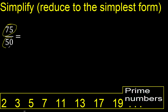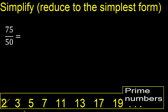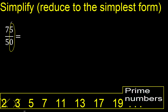75 and 50 cannot be divided by 2 because the last digit is not even. Cannot be divided by 3 because 50 cannot be divided by 3. 75 can be divided by 5, and 50 can be divided by 5, because the last digit is 5 or 0.